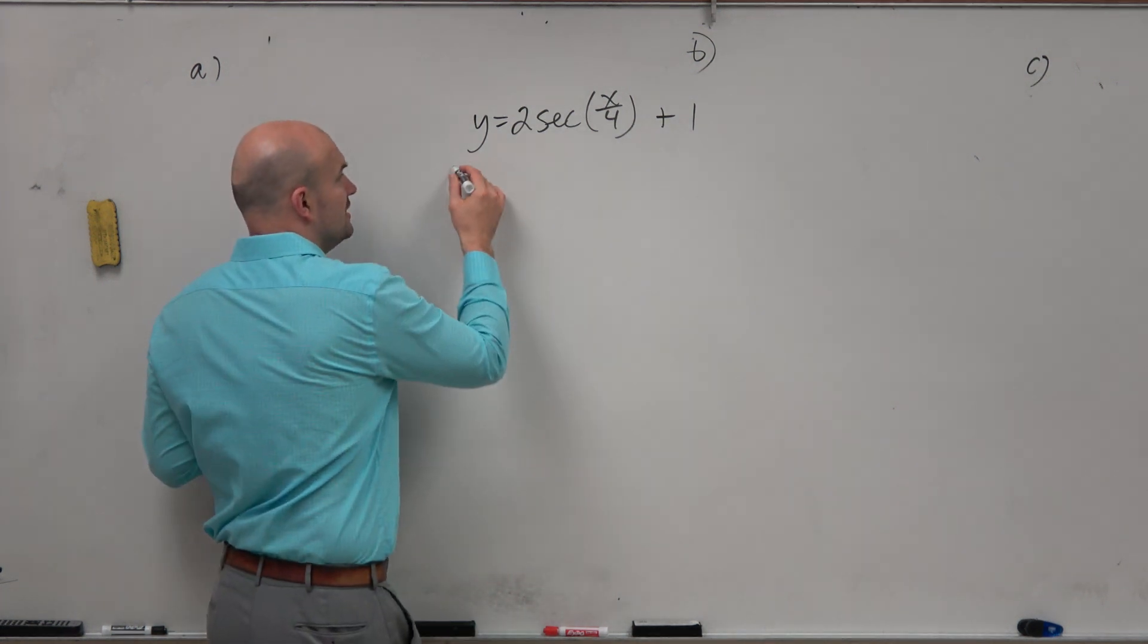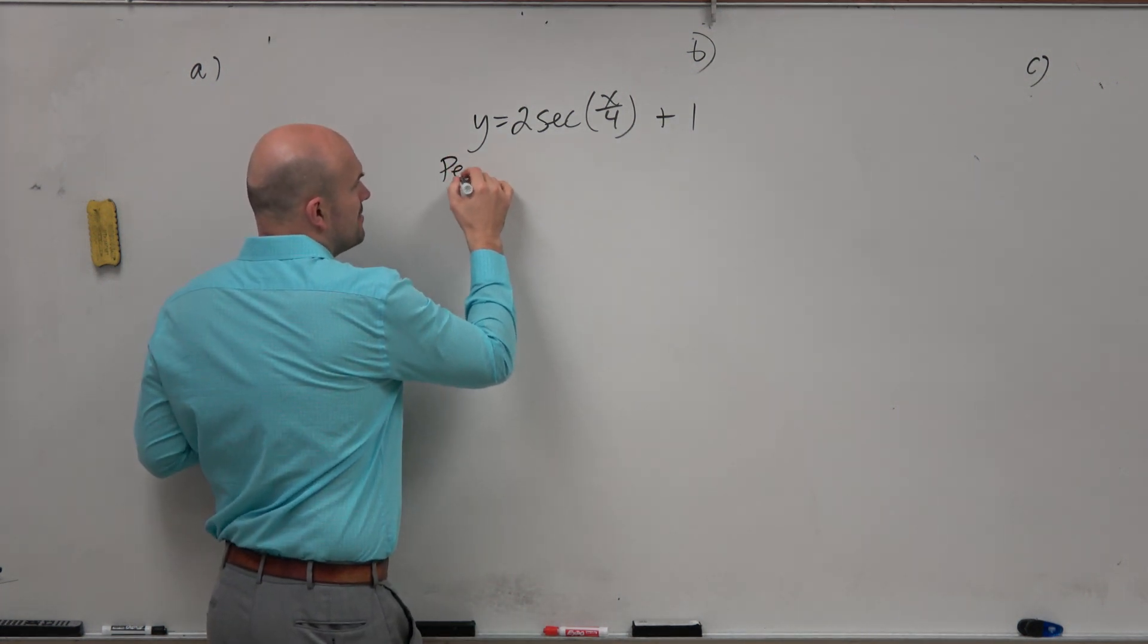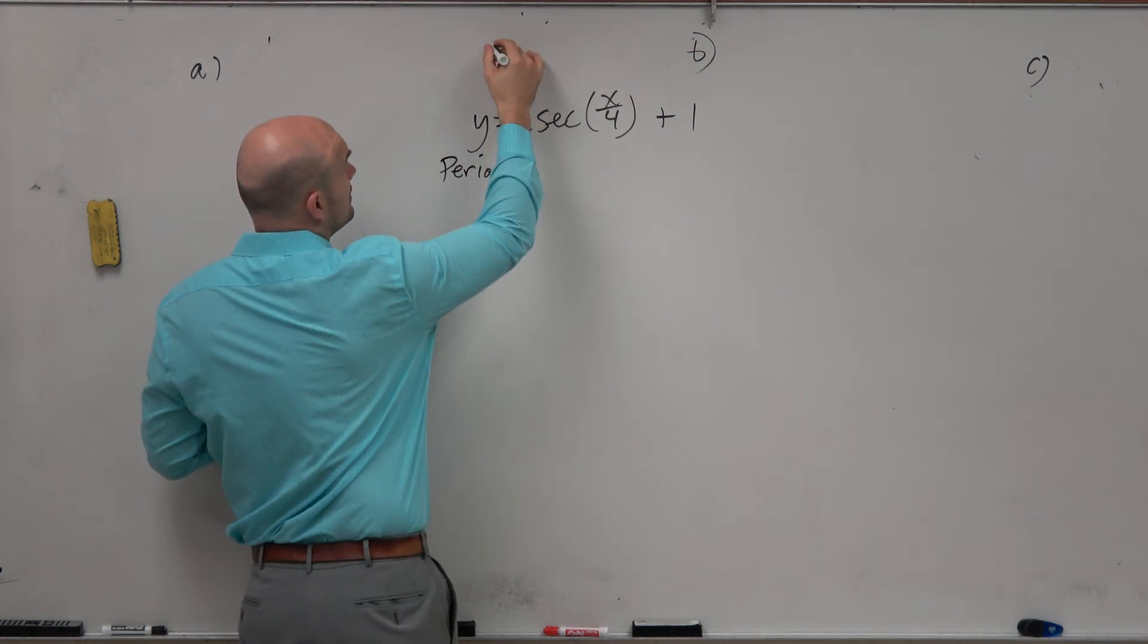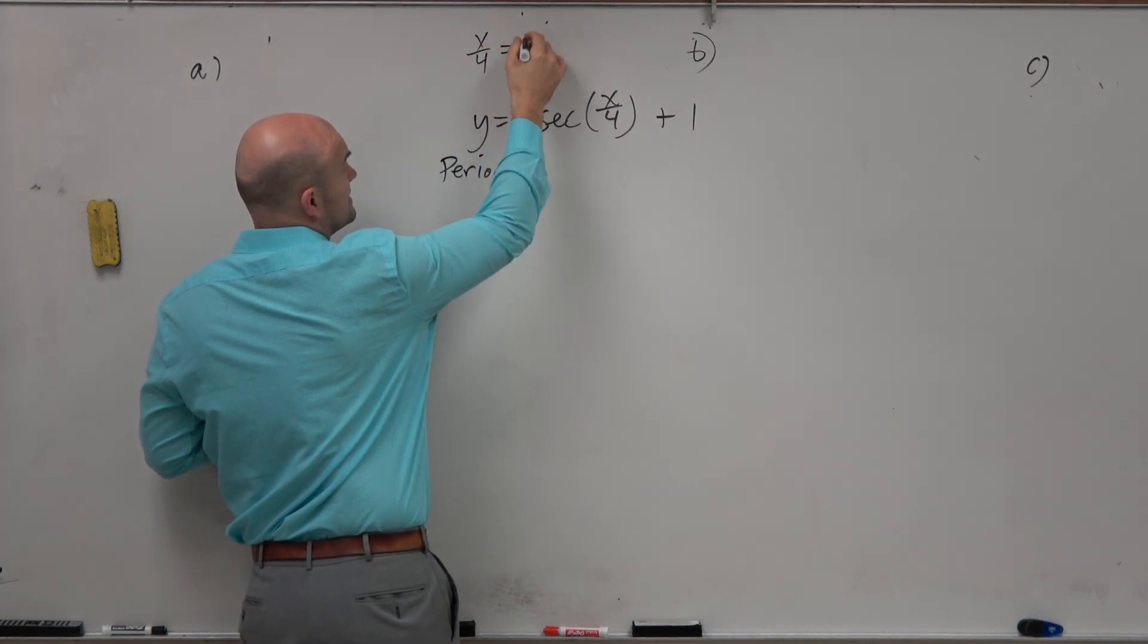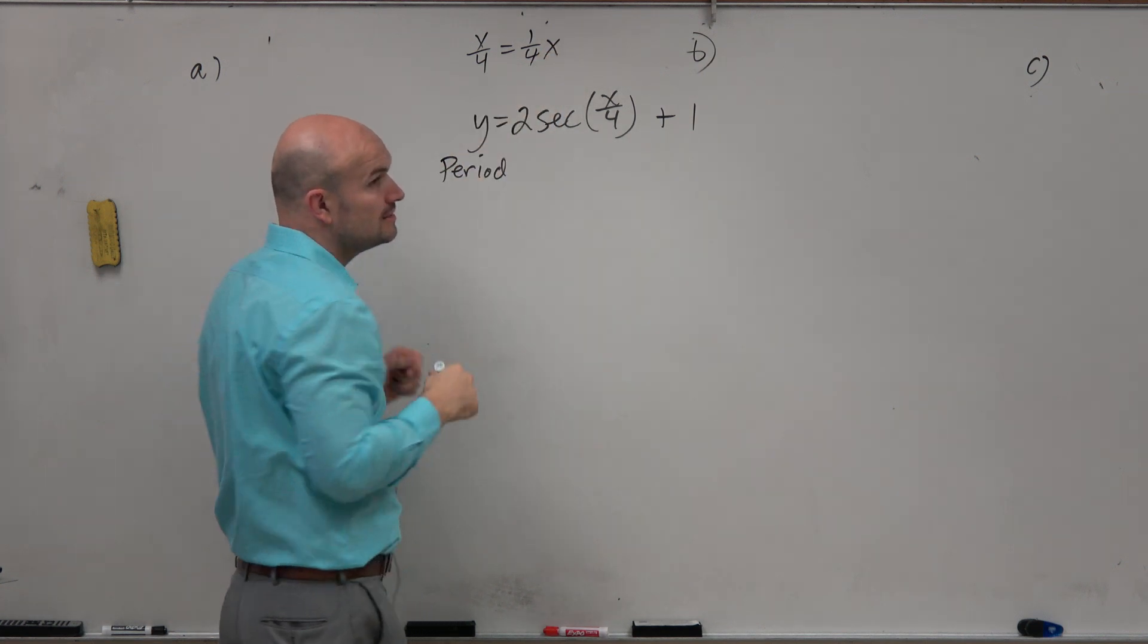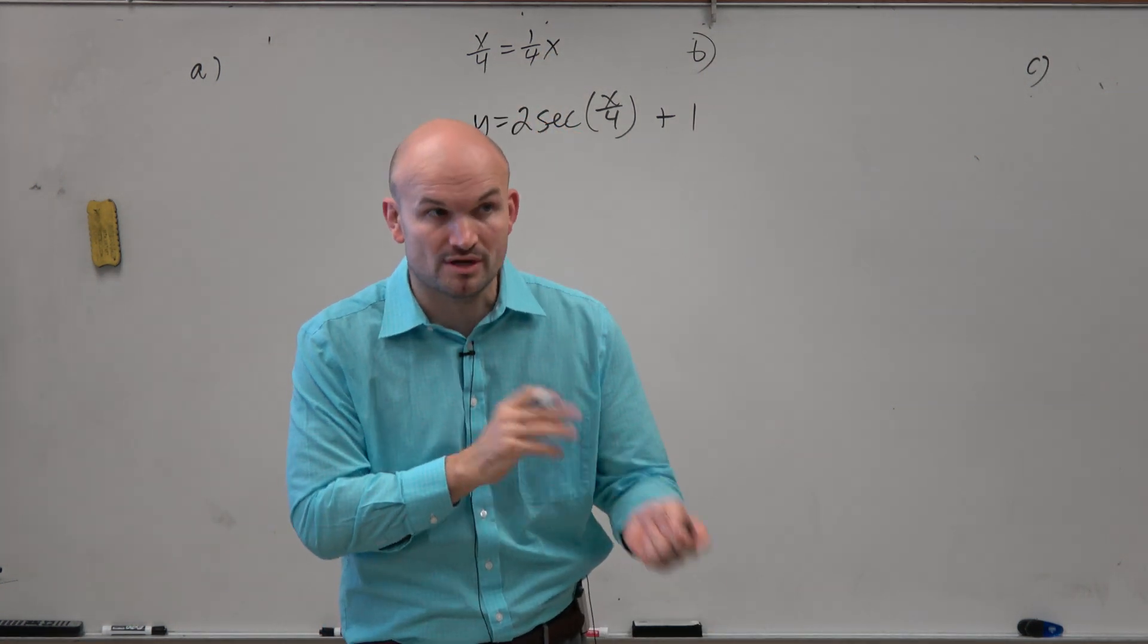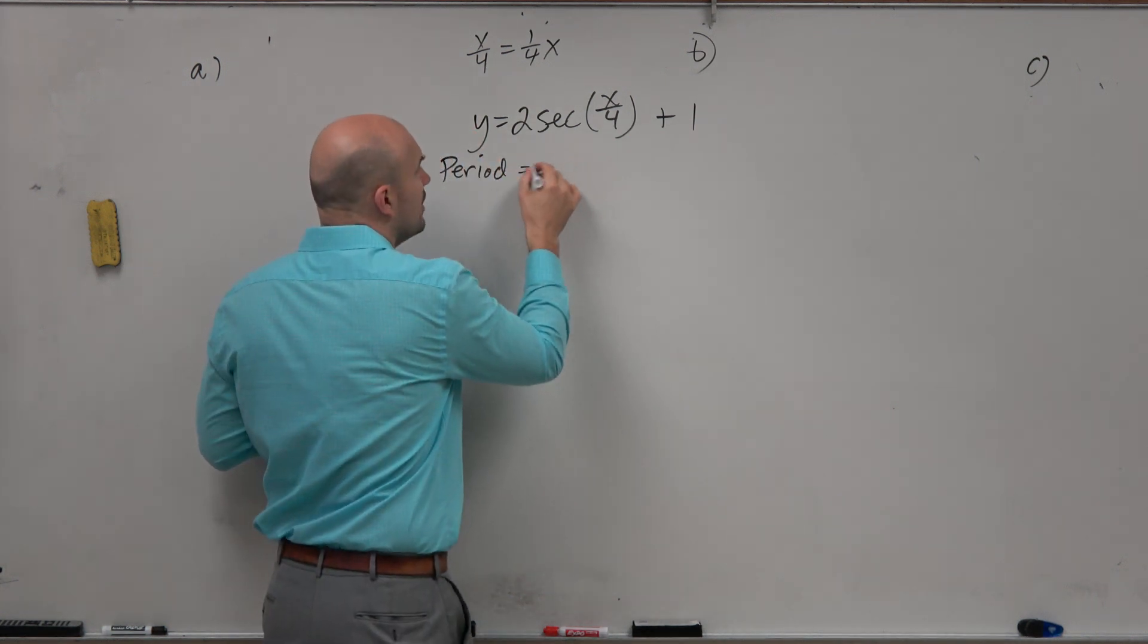OK, so don't be writing in amplitude, but let's do our period. So remember, period is going to be 2 pi divided by b. Well, x over 4, guys, is equal to 1 fourth x, right? Remember that. So it's not 2 pi divided by 1. It's not 2 pi divided by 4. It's 2 pi divided by 1 fourth.